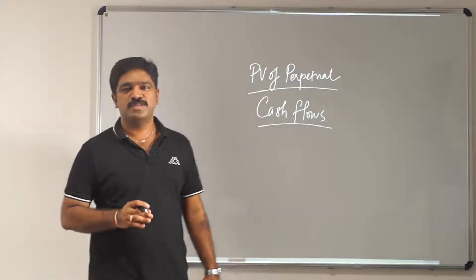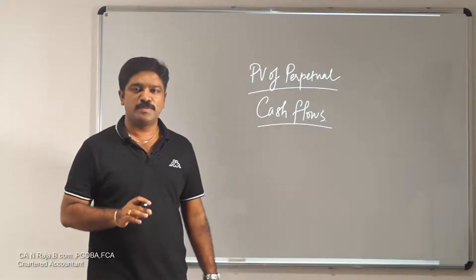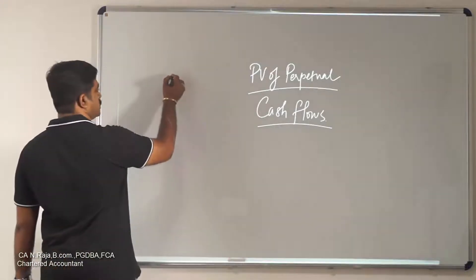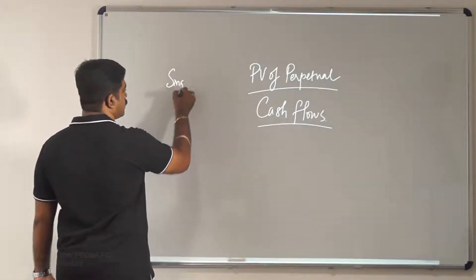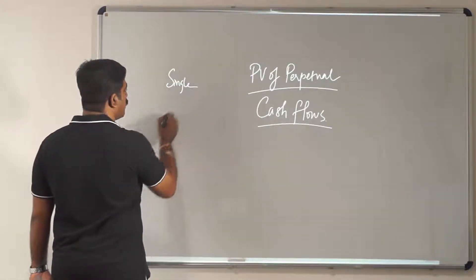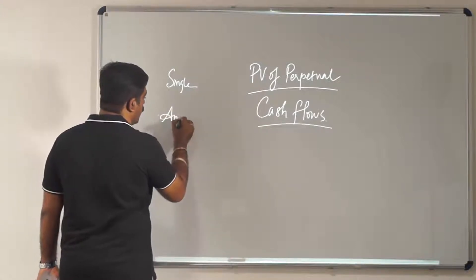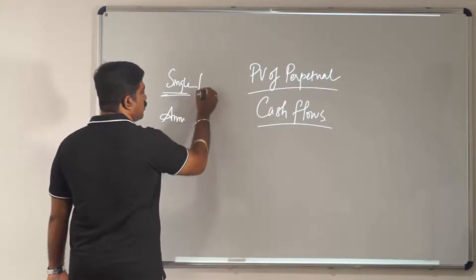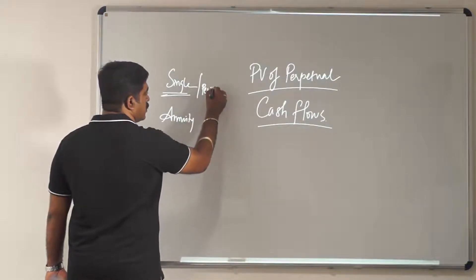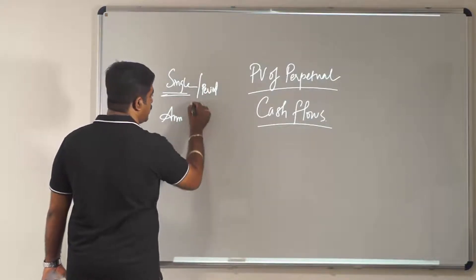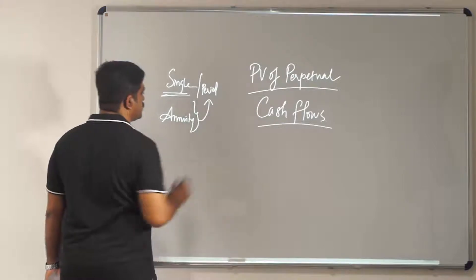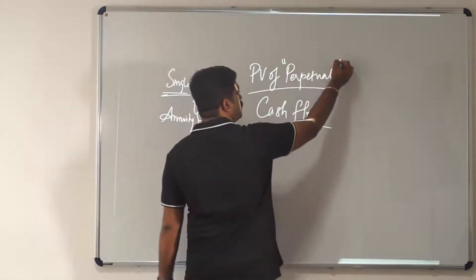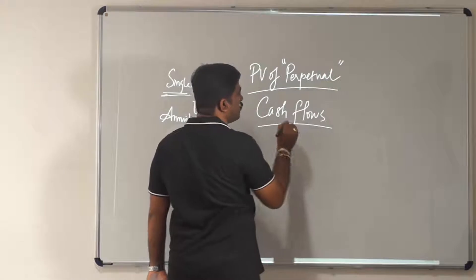Let us understand how to find out the present value of perpetual cash flows. In earlier sessions we have seen how to find out the present value of a single cash flow and the present value of an annuity. The single cash flow relates to a particular period, and an annuity covers a given set of periods.